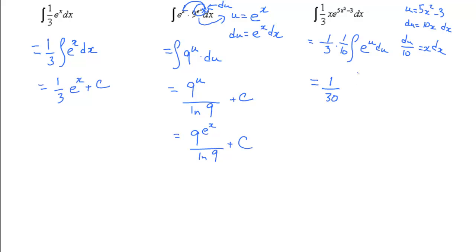It gives us 1 over 30. The integral of e to the u is e to the u plus a constant. When we put back in the value for u, it gives us 5x squared minus 3 as the exponent plus c.